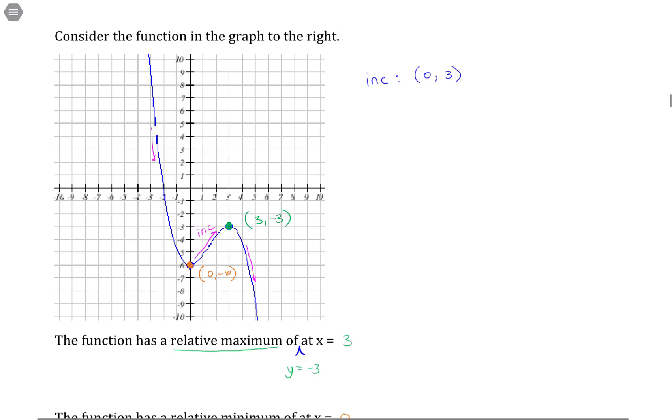So we are increasing on the interval from 0 to 3. And I'm using 0 to 3 because, if you'll notice, 0 on the x is here, 3 on the x is here. And it's that interval from here to here where the function is increasing. So that's why I've only used 0 to 3.